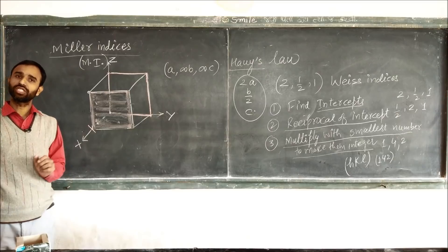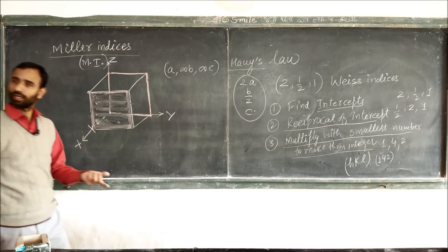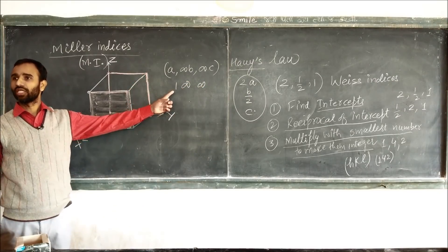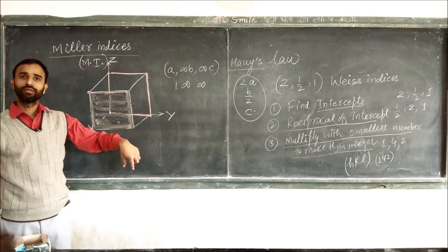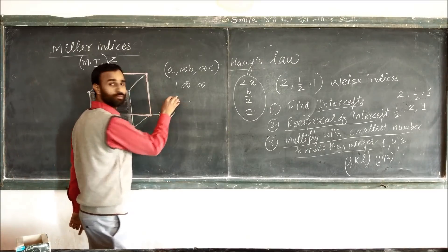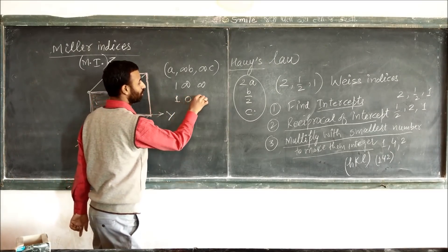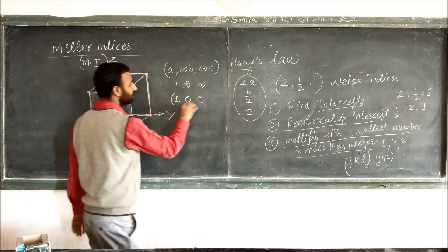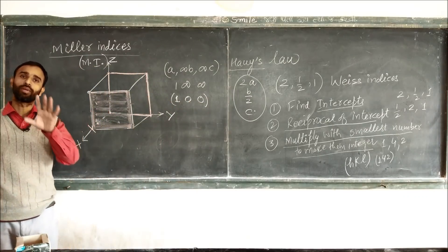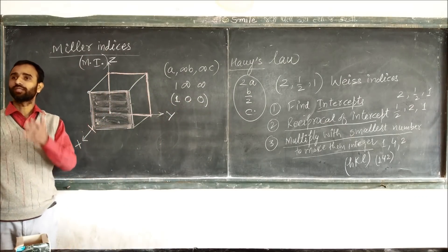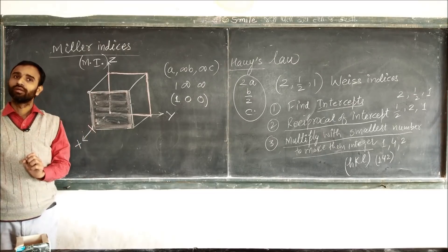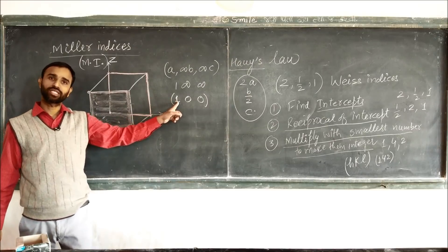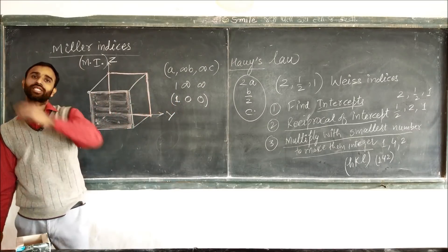So for the x-axis the intercept is A; for the y-axis it is infinity; and for the z-axis it is also infinity. So the Weiss indices are 1, infinity, infinity. Taking reciprocals gives 1, 0, 0. No need to multiply further. That means this is the (1,0,0) plane. This plane shows its direction — it cut only the x-axis, meaning it is parallel to the y and z axes.